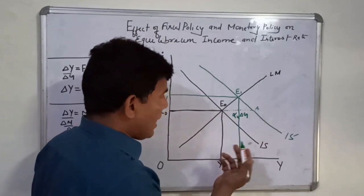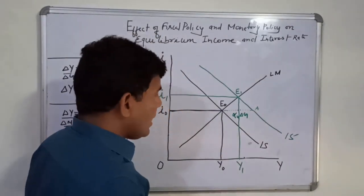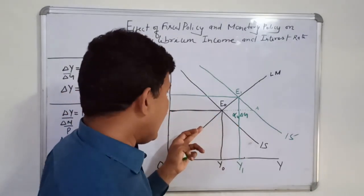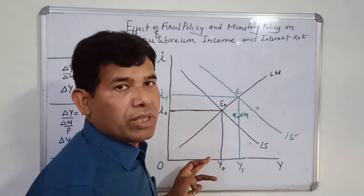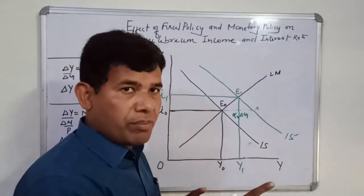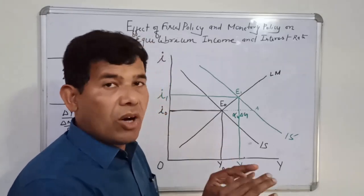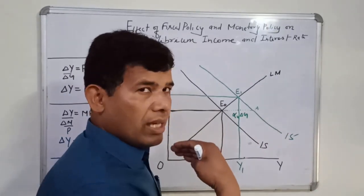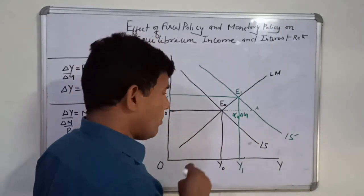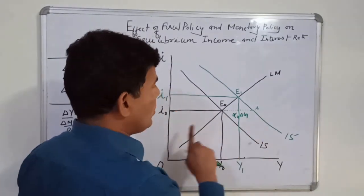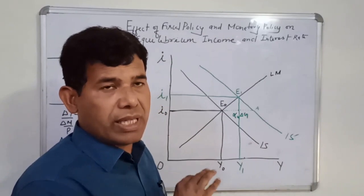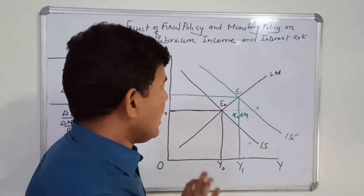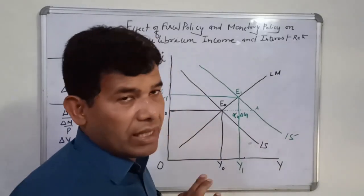So this is the impact of expansionary fiscal policy. Similarly, if government expenditure falls, the IS curve will shift leftward and you will have a lower level of output. This is what the implications of fiscal policy are with respect to determination of the level of output in the economy. Given money supply, if government expenditure rises, equilibrium income rises. If government expenditure falls, equilibrium income falls. This is the effect of expansionary and contractionary fiscal policy on equilibrium income and interest rate.